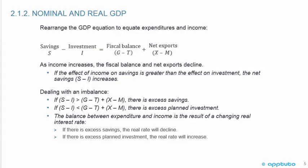This is an important slide. We can rearrange the GDP equation to equate expenditure and income. Savings minus investment equals the fiscal balance plus net exports. As income increases, the fiscal balance and net exports decline. If the effect of income on savings is greater than the effect on investment, the net savings S minus I increases.